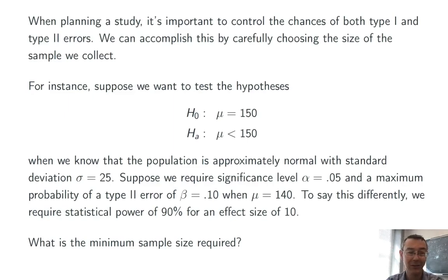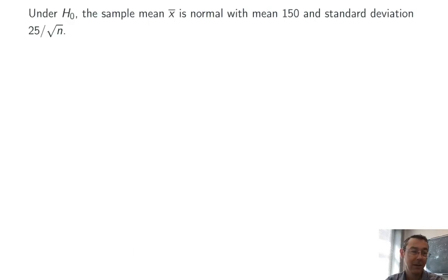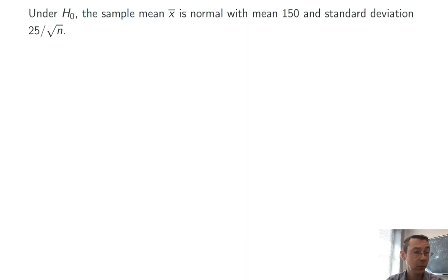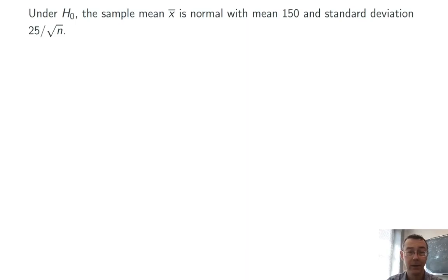So the question is just what is the minimum sample size that we can get away with in this study? We're going to use two conditions here. The first is going to be our condition on alpha, and the second is the condition on beta. Starting with alpha, we're assuming that the null hypothesis is true. So the sample mean x-bar is going to be normal with mean 150, and standard deviation 25 over the square root of n — that's the population standard deviation divided by the square root of the sample size.